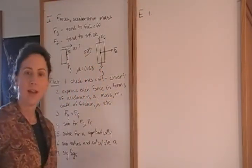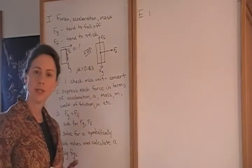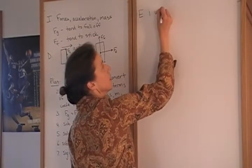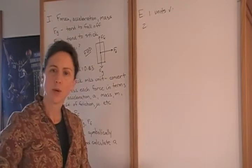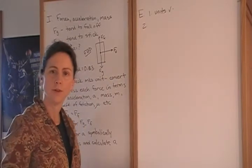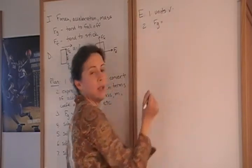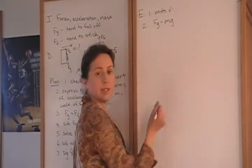First of all, the only value we were given is this coefficient of friction, and it is a unitless number, so we're good to go on MKS units. Secondly, we want to express each force in terms of other physical parameters. Let's start with the gravitational force. That's going to be equal to the mass of the bat times gravitational acceleration.